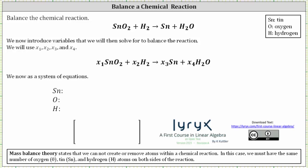We want to balance the given chemical reaction. The mass balance theory states that we cannot create or remove atoms within a chemical reaction, which means in this case we must have the same number of oxygen, tin, and hydrogen atoms on both sides of the reaction. Notice right now we don't.